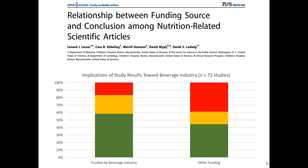Here's an interesting study that illustrates why we should be suspicious when we have reason to believe that the people behind a study may have an agenda. This paper is called 'The Relationship Between Funding Source and Conclusion Among Nutrition-Related Scientific Articles,' from the academic journal PLOS Medicine. You can access this study online for free.